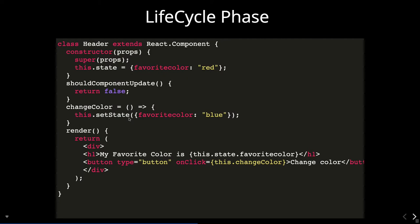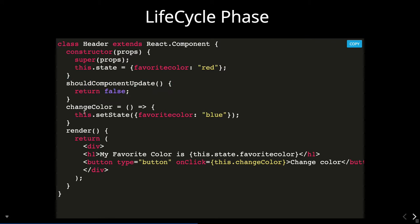shouldComponentUpdate is returning false in this example — if you return false, re-rendering will not happen. You only need to override shouldComponentUpdate if there is a specific need; by default it returns true. You can override it and make it return false if you want to prevent unnecessary re-rendering of a component.